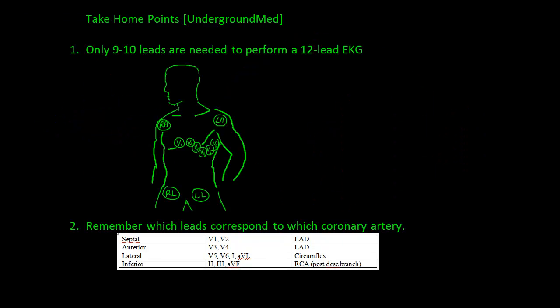Only 9 to 10 leads are needed to perform a 12-lead EKG. Once again, the proper lead placement is shown here. You should memorize where those 10 leads are placed and understand the directionality of each lead.